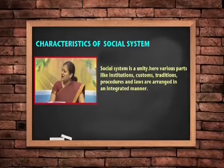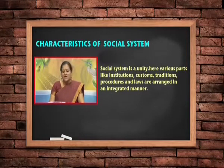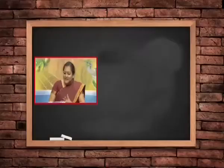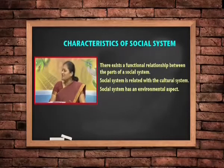As a system and as a unity, various parts of the system — like institutions, customs, traditions, value preferences, and laws — are arranged in an integrated manner. This is an important characteristic of a system: where all the parts are integrated in a whole, and there is also a functional relationship existing between these parts. All these parts are in fact functionally interdependent upon each other.